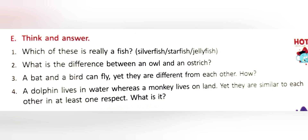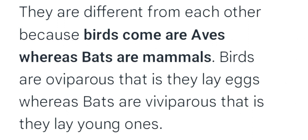Question three: A bat and a bird can both fly, yet they are different from each other — how? Answer: They are different because birds are aves while bats are mammals. Birds are oviparous, meaning they lay eggs, whereas bats are viviparous, meaning they give birth to young ones.